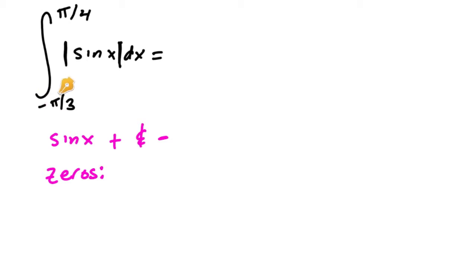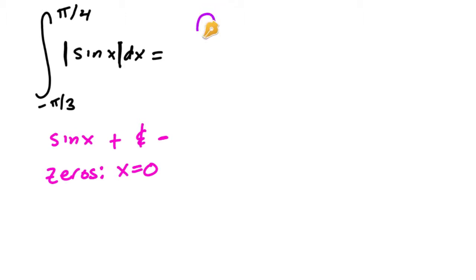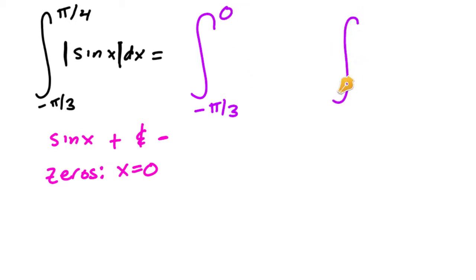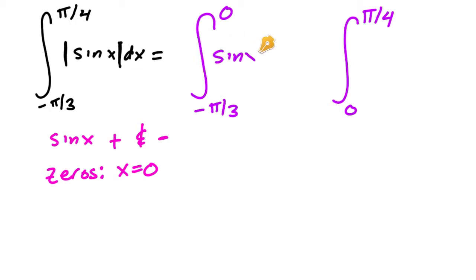On our interval from negative pi over three to pi over four, sine is equal to zero at x equals zero. So that means I'm going to split up this integral into two parts: from negative pi over three to zero, and then from zero to pi over four — and both of these will be of sine of x.